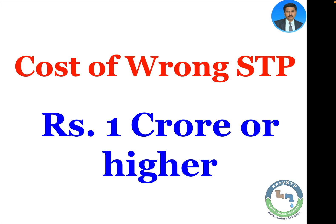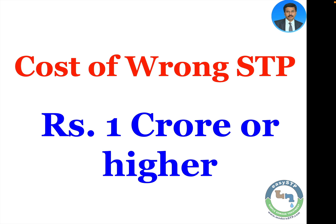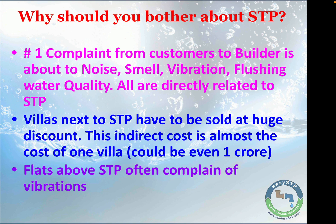Assuming a 50% discount on two villas on either side of the STP, the cost is equivalent to the full price of one villa, which is in excess of 1 to 2 crores today. The second reason why STP is important for the builder is that apart from money, you are also losing a lot of customer goodwill.